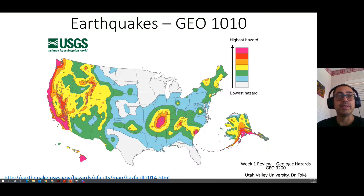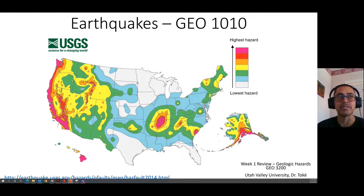Earthquakes can be quite devastating. The USGS has a whole earthquake hazards group to help characterize hazards across the US and elsewhere. This is an earthquake shaking hazard map across the US. We can see that shaking potential seems highest on the left coast, where we have plate boundaries between the North American and Pacific plates, as well as the Juan de Fuca plate on the subduction zone in Oregon and Washington, resulting in lots of faults and earthquake hazard.